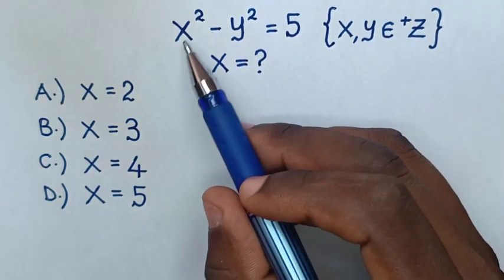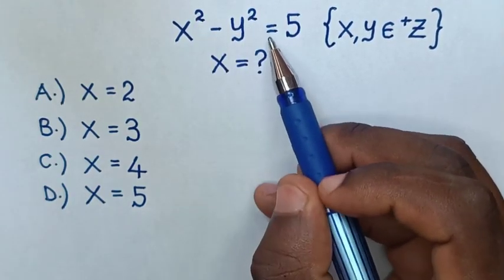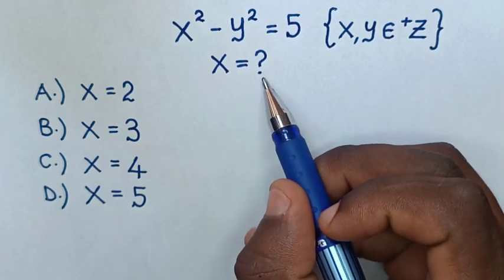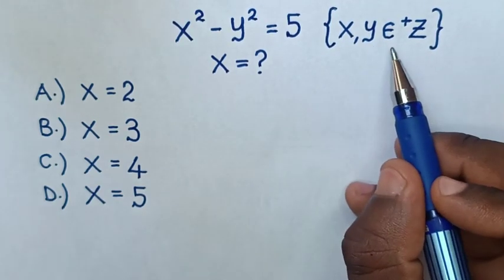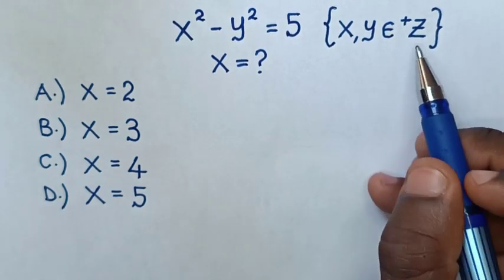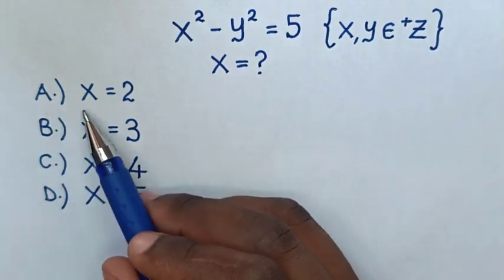Hello. How to solve x squared minus y squared equals 5 to find the value of x, such that x and y are elements of positive integers